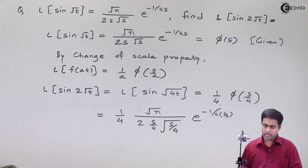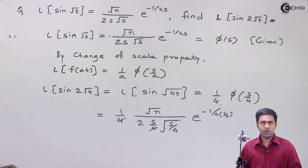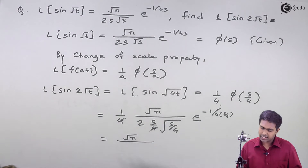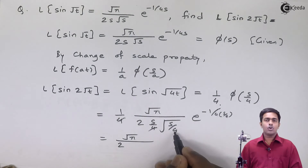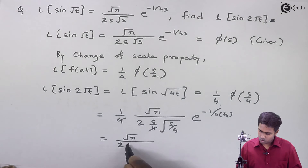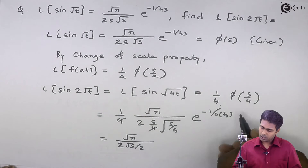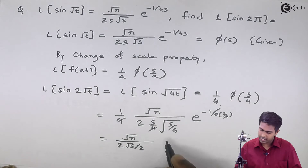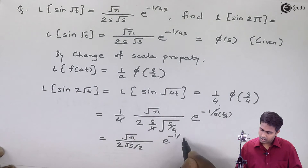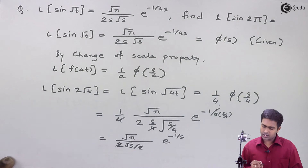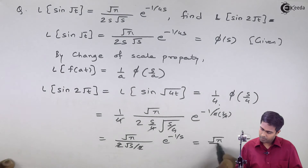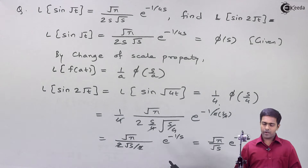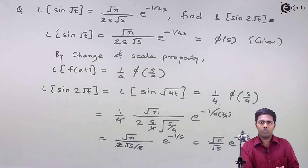Now let's simplify. The 4 and 4 cancel out. Root pi remains as is. Next, 2 remains as is. Root s — root 4 is nothing but 2 — gives root s upon 2. The 4 and 4 in the exponent cancel, giving e raised to minus 1 upon s. Then this 2 and that 2 cancel out, and we get the answer as root pi divided by root s, into e raised to minus 1 upon s. So we have got the answer by using the change of scale property.